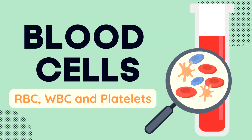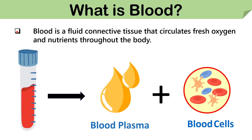Hello everyone, welcome back to our channel Biology Reader. Today we are going to discuss blood, its components, types of blood cells found in it, and their functions. Before going deep into the topic, let's discuss the basics first. Blood is a fluid connective tissue which is pumped by the heart, circulated throughout the body, and then returns to the heart through the process called circulation of blood.